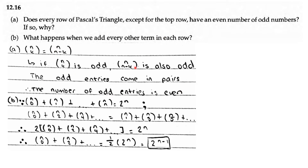Part B: What happens when we add every other term? The sum n choose 0 plus n choose 1 all the way to n choose n equals 2 to the power of n. Every other term is n choose 0 plus n choose 2 plus n choose 4, which also equals n choose 1 plus n choose 3 plus n choose 5. So 2 times that sum equals 2 to the power of n.